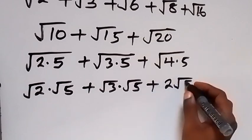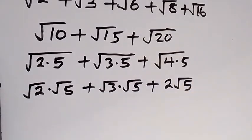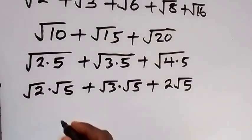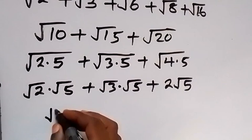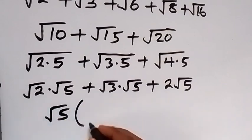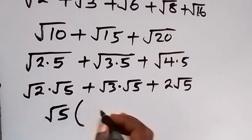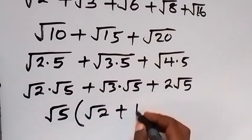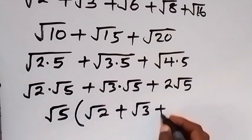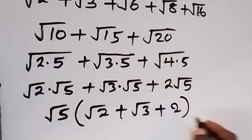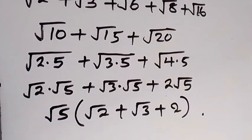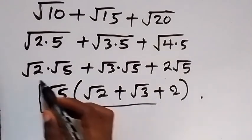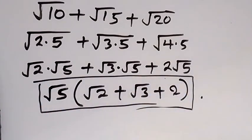Then plus root 4, which is 2, giving us 2 root 5. From here we have root 5 common in all three terms, so let's take it out. We have root 5 into bracket, and what is left is root 2 plus root 3 plus 2. Let's keep this for the numerator and simplify the denominator as well.